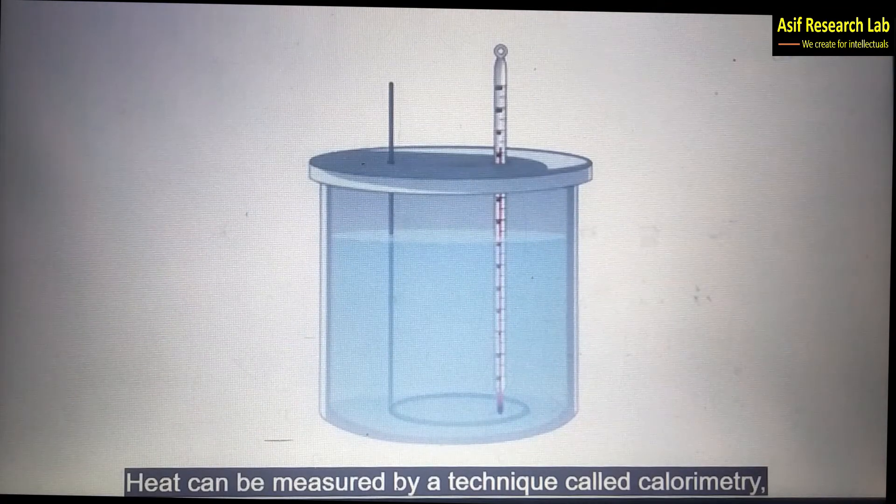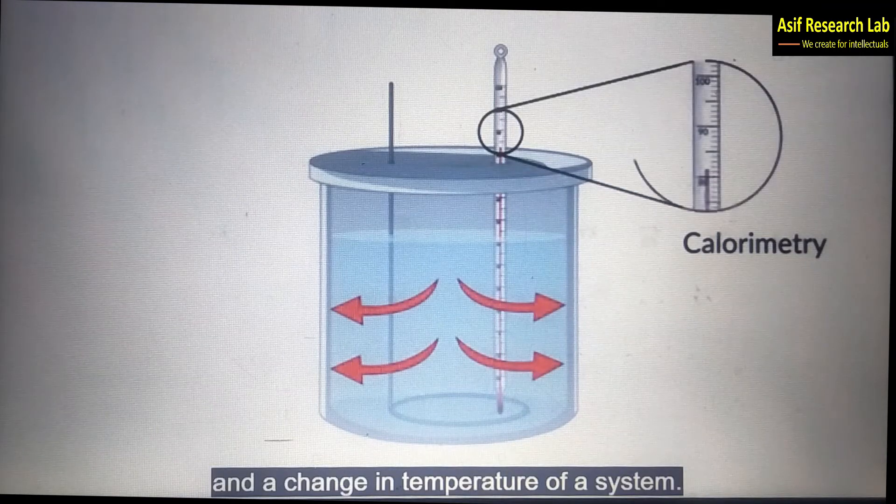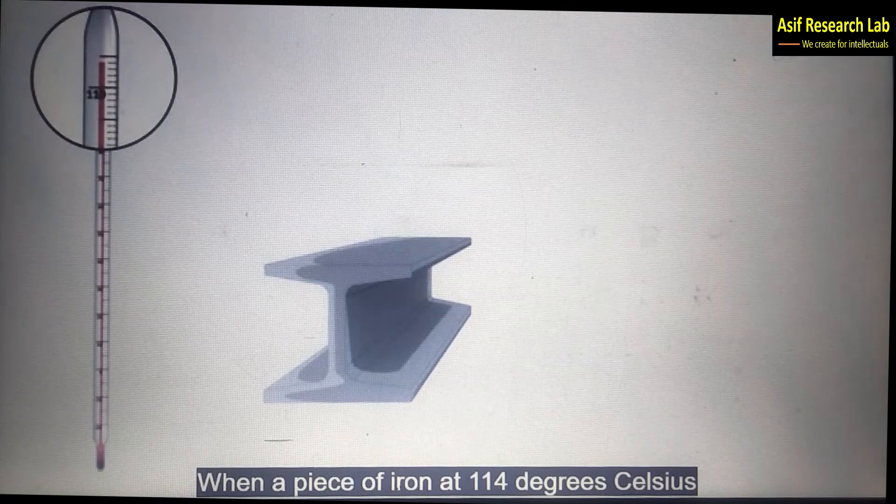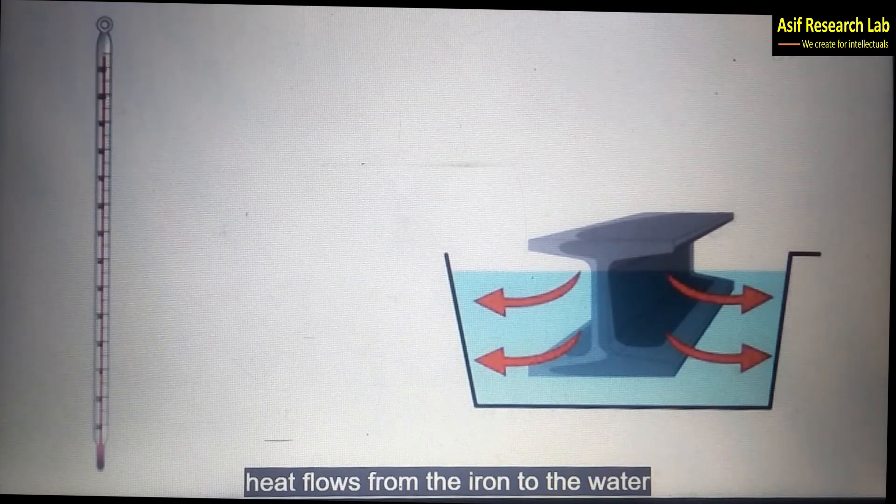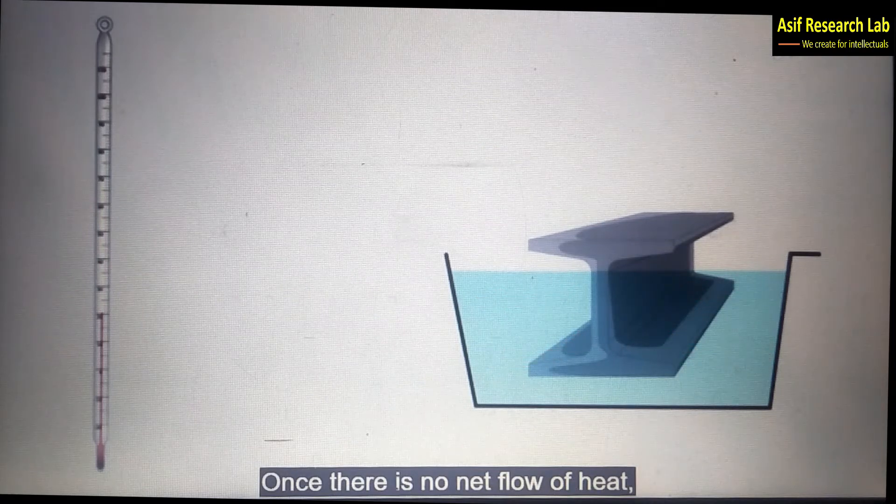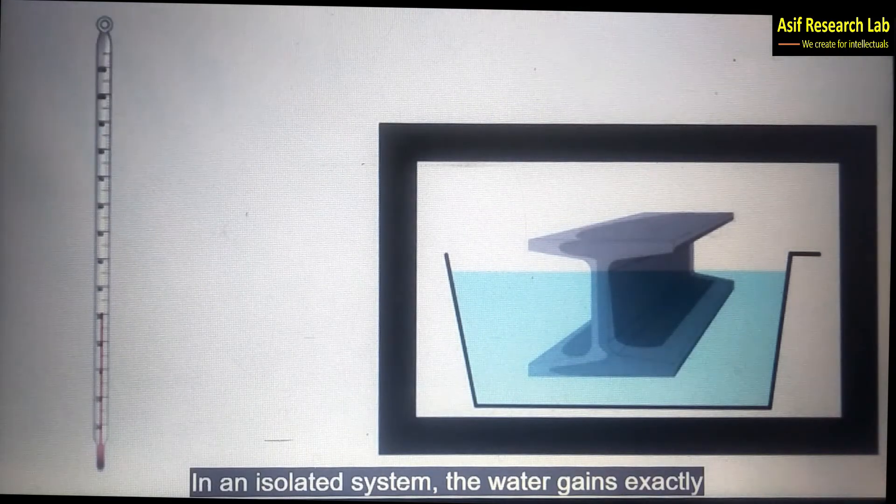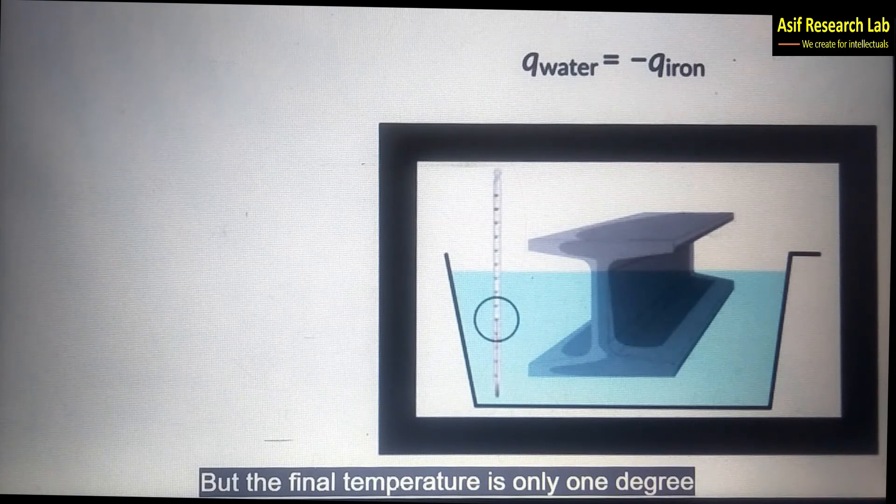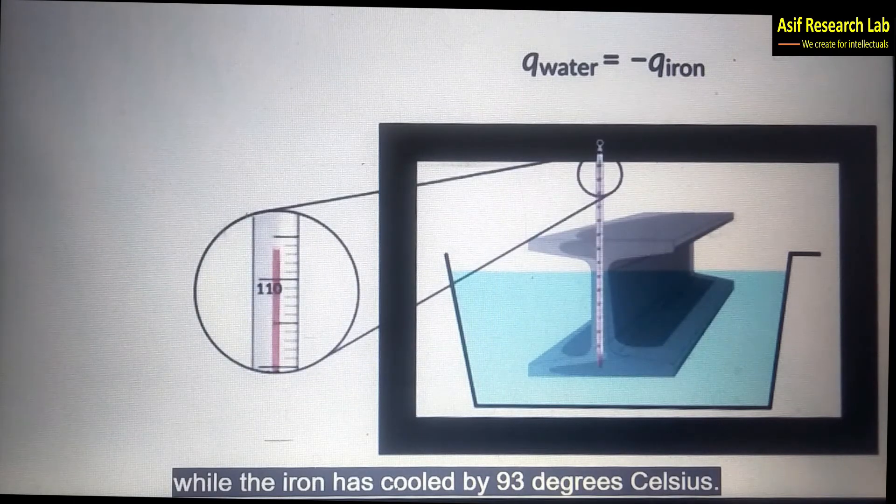Heat can be measured by a technique called calorimetry which uses a relationship between the heat and a change in temperature of a system. When a piece of iron at 114 degrees Celsius is placed in room temperature water heat flows from the iron to the water until they are the same temperature. Once there is no net flow of heat they are in thermal equilibrium. In an isolated system the water gains exactly as much heat as the iron loses. But the final temperature is only one degree above the water's starting temperature while the iron has cooled by 93 degrees Celsius.